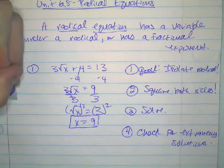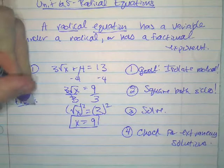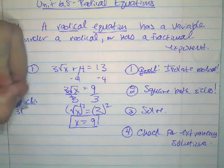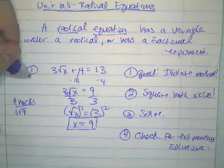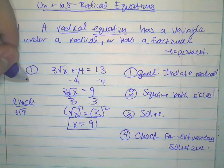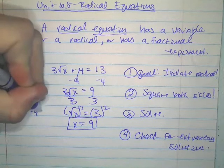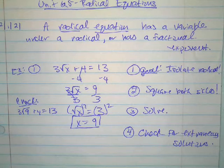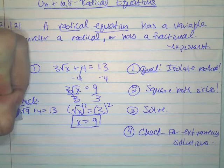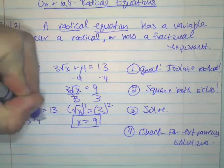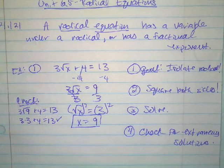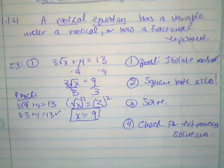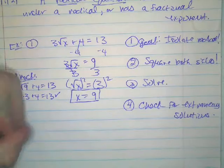Checking: I plug in x equals 9 and get 3 times the square root of 9 plus 4, which should equal 13. Taking the principal square root, that's 3 times 3 plus 4, which is 9 plus 4. Yes, that checks out — this solution works.